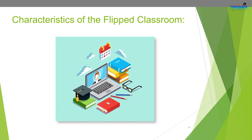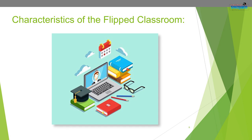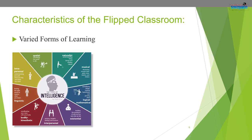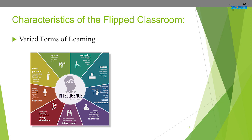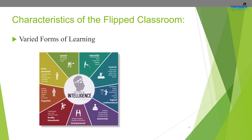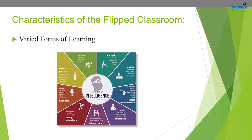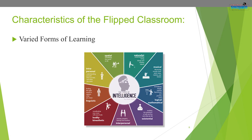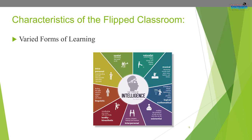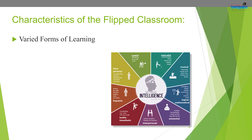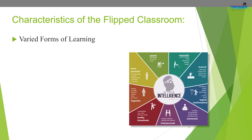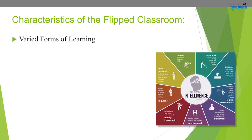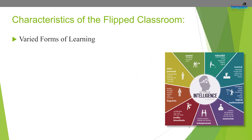The very first characteristic of flipped classroom learning is varied forms of learning. Empirical findings in pedagogical research have identified that flipped classroom learning consists of all forms of learning, including all learning styles — oral, visual, problem solving, critical thinking, along with creativity and innovation.